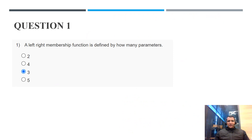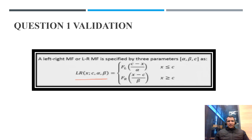Question 1: A left-right membership function is defined by how many parameters? It is a straightforward question — the answer is three. For cross validation, I took a snapshot from the lecture material. You can clearly see that there are three parameters: alpha, beta, and C, through which it can be defined.